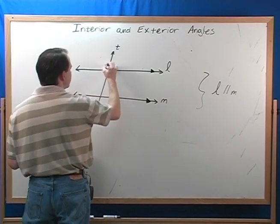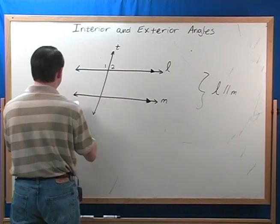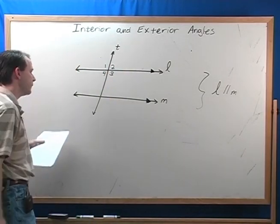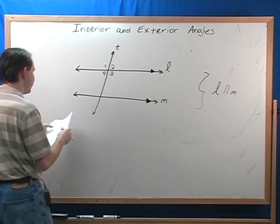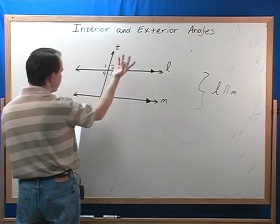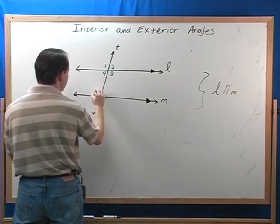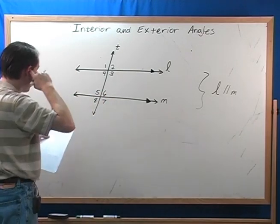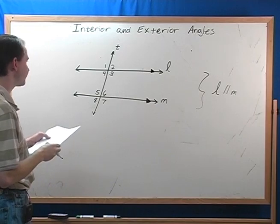Let's call this angle, angle one, this one angle two, this one angle three, and this one angle four. I'm just labeling them only so that I can reference them later. There's nothing special about these numbers. I'm just putting them there so I can reference them. This one will be number five, six, seven, and eight. So there's eight angles. We already just talked about that.